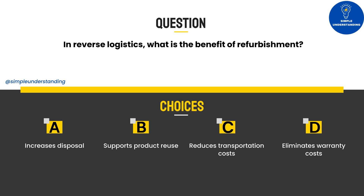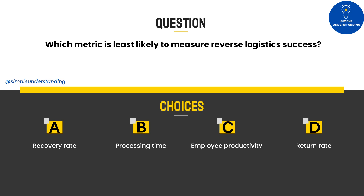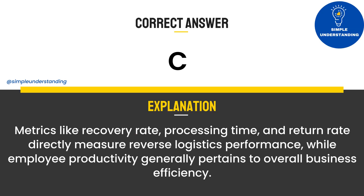Question 3: In reverse logistics, what is the benefit of refurbishment? A. Increases disposal. B. Supports product reuse. C. Reduces transportation costs. D. Eliminates warranty costs. Answer: B. Refurbishment restores returned products, making them resaleable, which supports reuse and waste reduction. Question 4: Which metric is least likely to measure reverse logistics success? A. Recovery rate. B. Processing time. C. Employee productivity. D. Return rate. Answer: C. Metrics like recovery rate, processing time, and return rate directly measure reverse logistics performance, while employee productivity generally pertains to overall business efficiency.